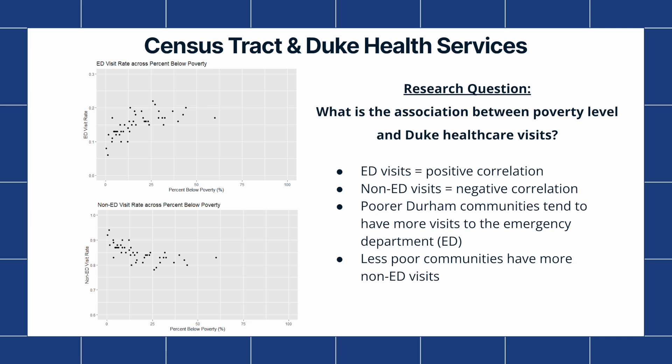To start off, we looked at the association between poverty levels and Duke health care visits, specifically to see the rates of emergency department, also known as the ED, and non-emergency department visits. Both graphs have percentage below poverty as their x-axis, taken from the American Community Surveys. The y-axis for the first graph shows ED visit rates ranging from 0 to 0.3, and the second graph shows non-ED visit rates ranging from 0.6 to 1, calculated based on visits over the total number of individuals per census tract. The first graph shows a positive trend, meaning poor communities have more ED visits. The second graph shows a negative trend, meaning poor communities have fewer non-ED visits.